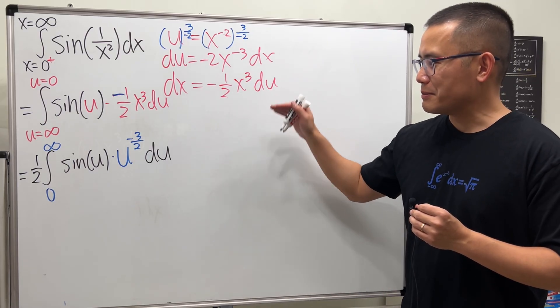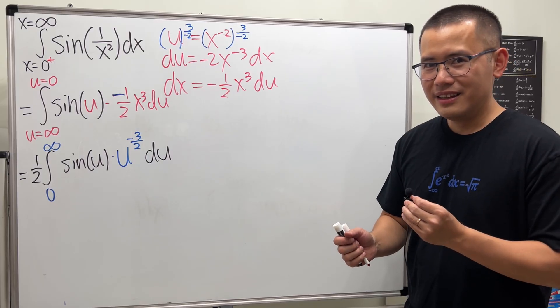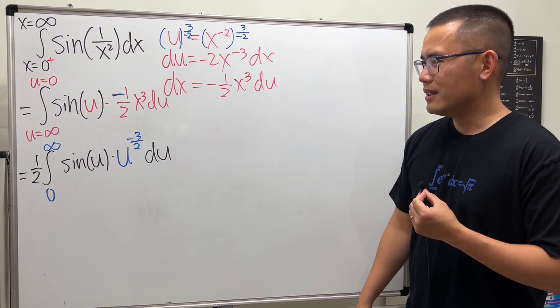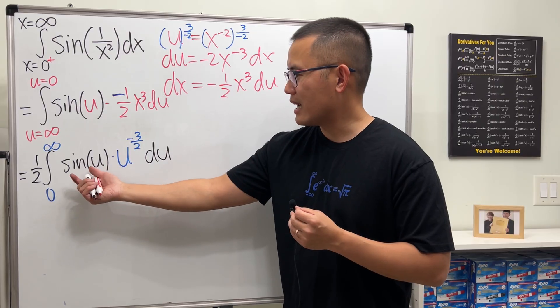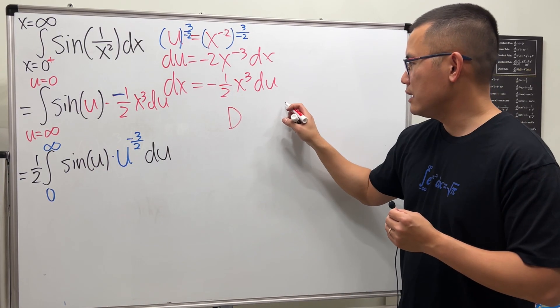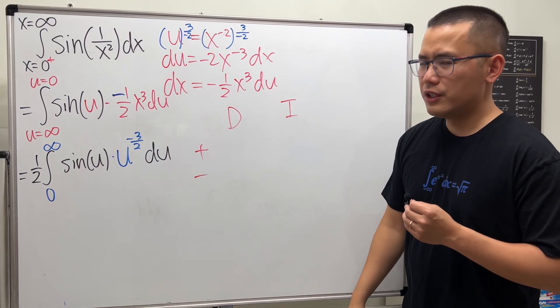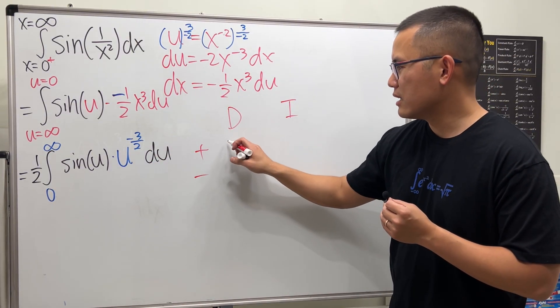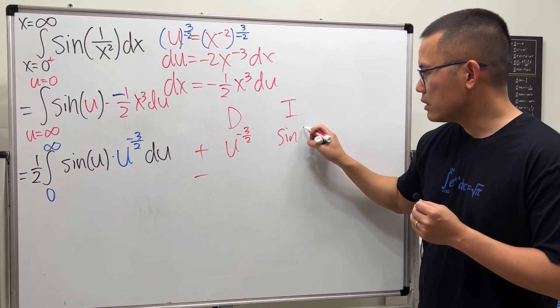So u substitution is perhaps the most fundamental integration technique. The next one, I'll argue, is the integration by part. So let's try it, especially when we have u to some power times sine of u, maybe integration by parts. So let's go ahead and put the d and also the i, plus minus. But what should we be differentiating, though? Usually, when we have u to some power, we will do that. Differentiate that. So u to the negative 3 over 2, and then we integrate sine u, okay?